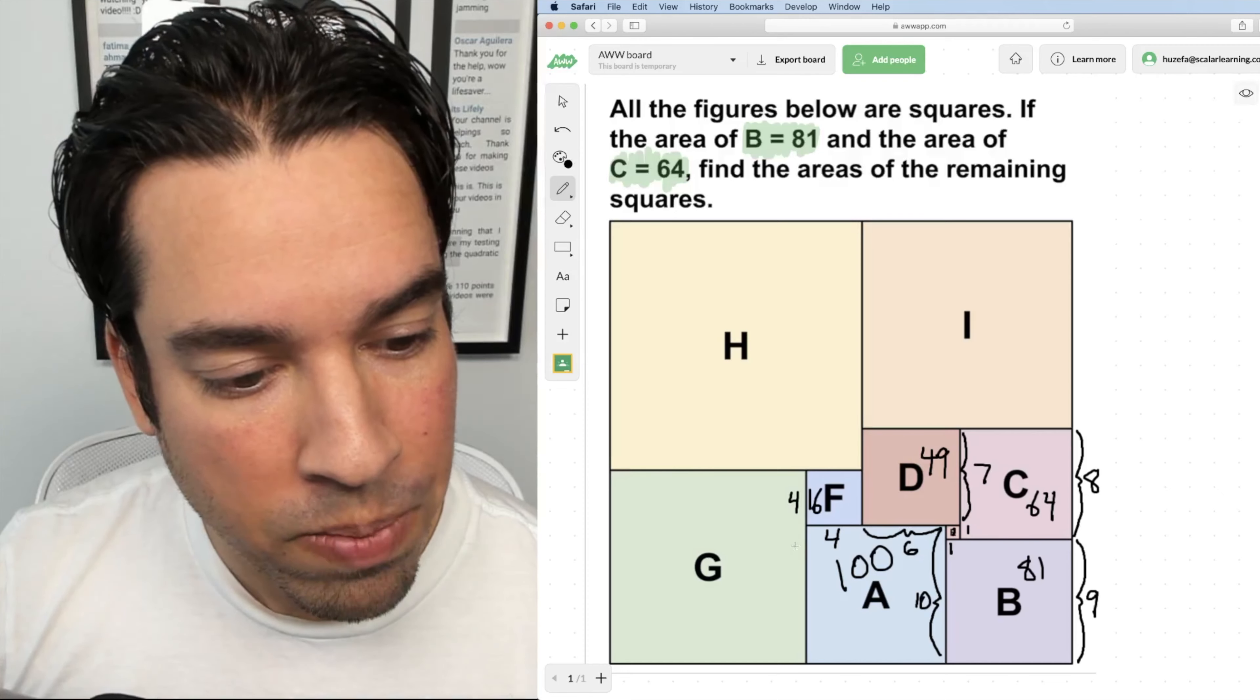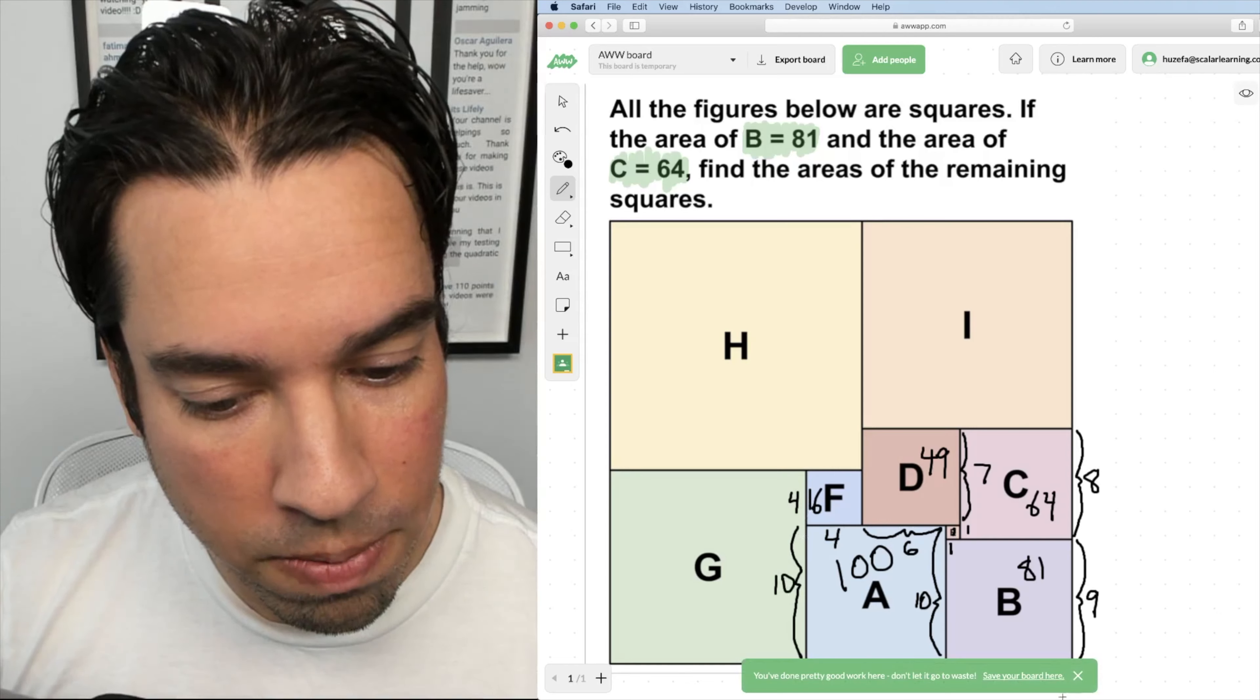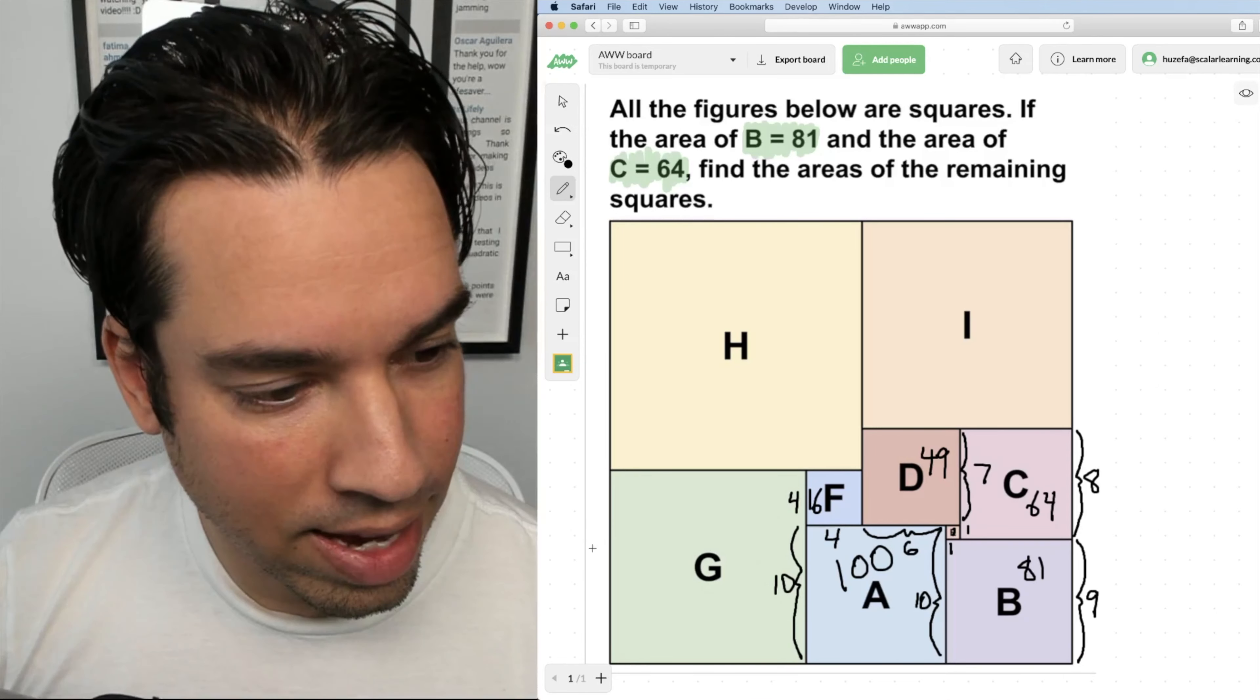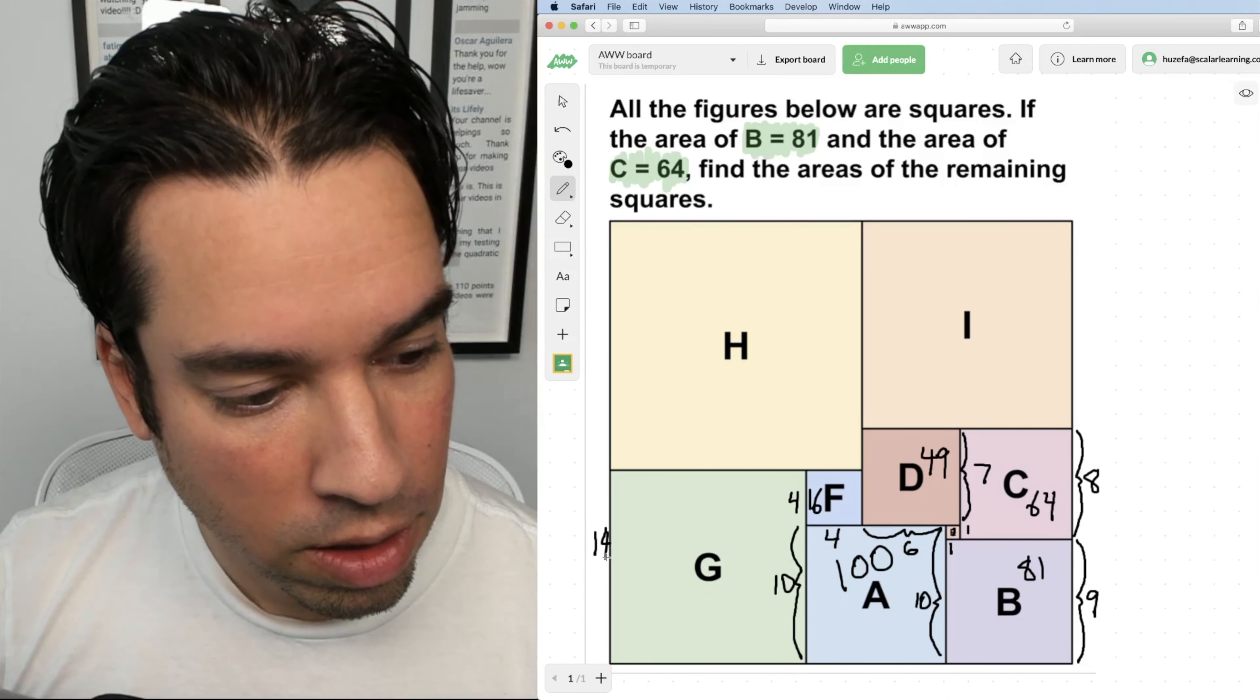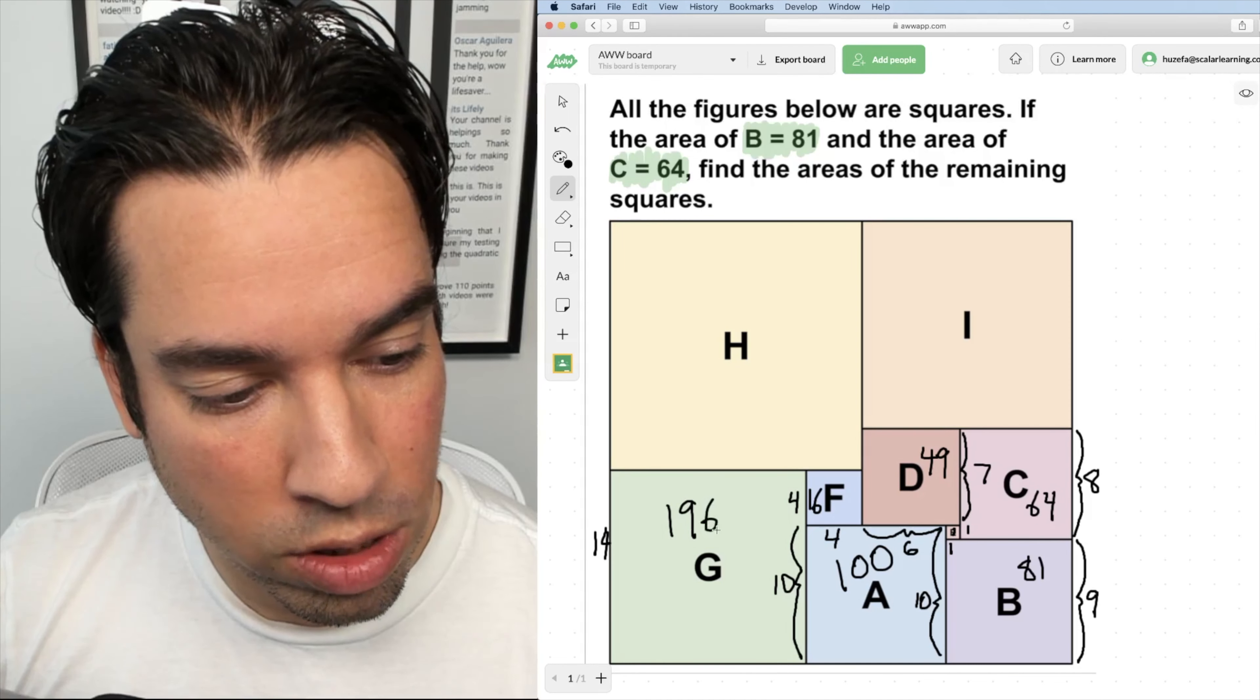Next, we get to G. If I know that this length right here is 10, and F has a length of four, then I know that G has a length of 14. Right? So it's a 14 by 14 square, which means it has an area of 196. That's 14 squared.